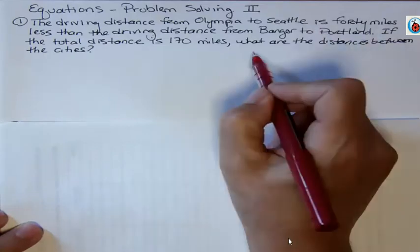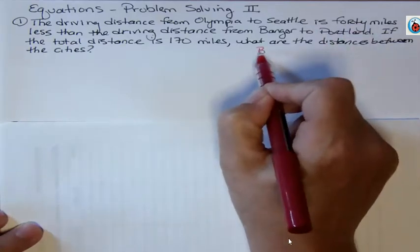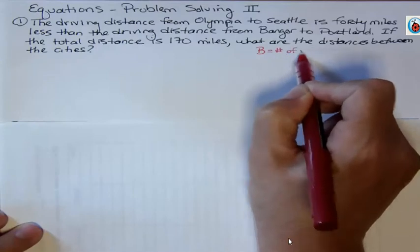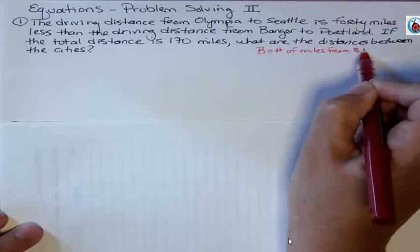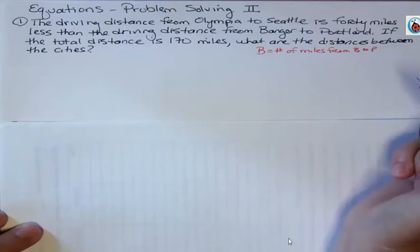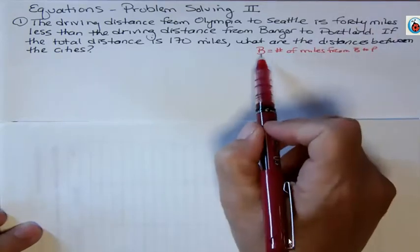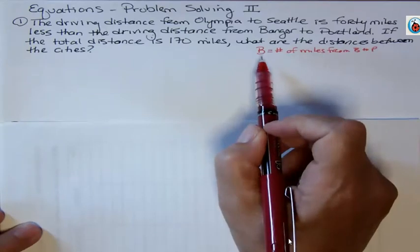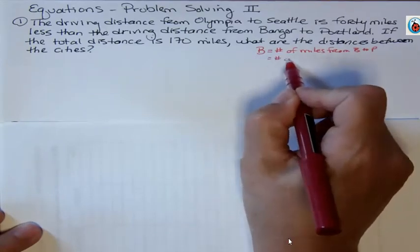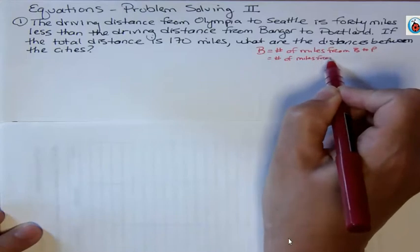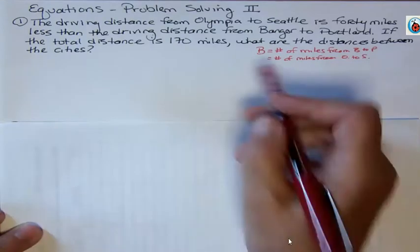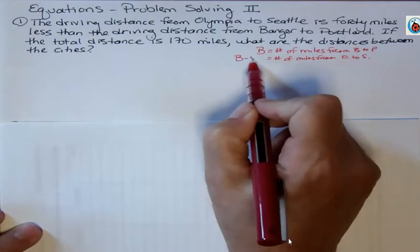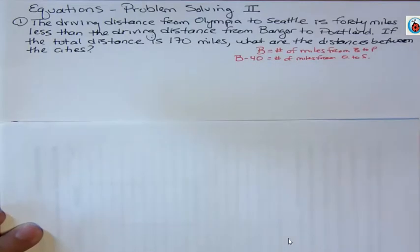I'm going to say B is the number of miles from Bangor to Portland. Now I don't want a new variable, I want to just use B, but I want to describe the number of miles from Olympia to Seattle. Well, it's 40 miles less than the other trip, so we're going to take Bangor and subtract 40.